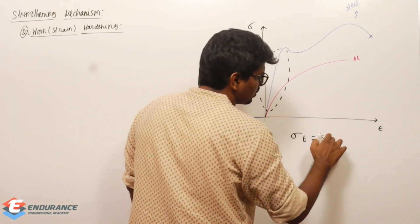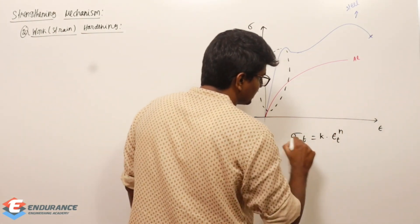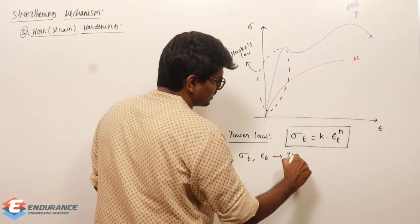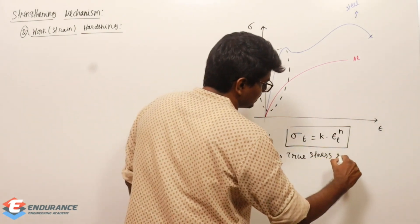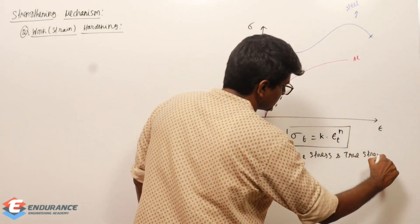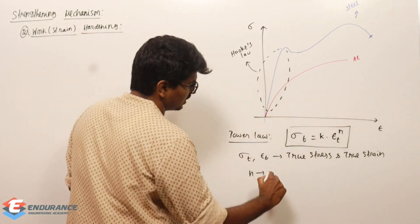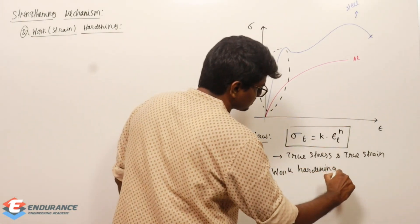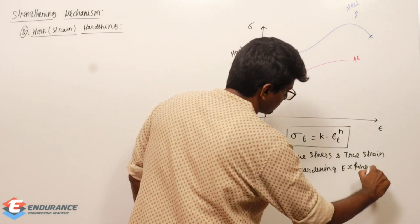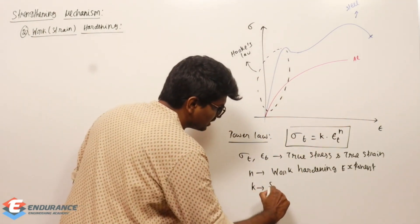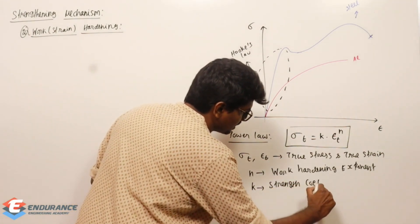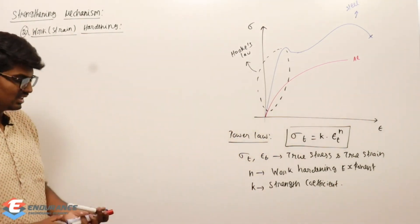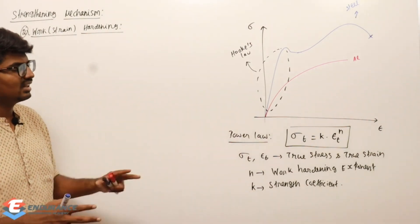The power law states: true stress σ_t equals K times true strain ε_t to the power n. Here n is the work hardening exponent, also called the strain hardening exponent, and K is the strength coefficient.